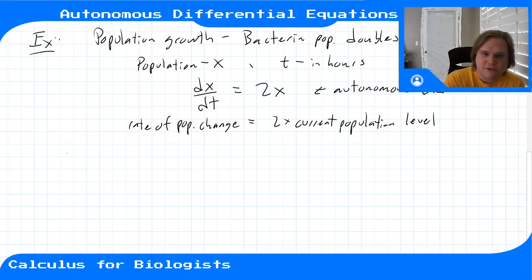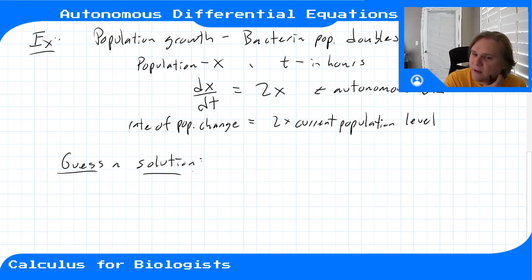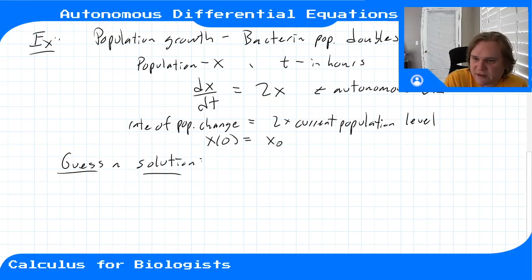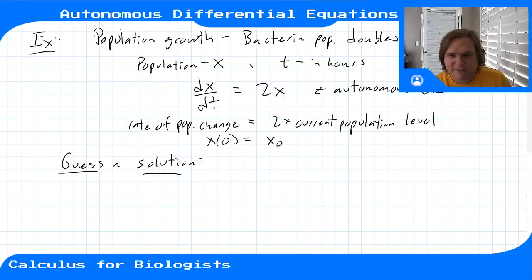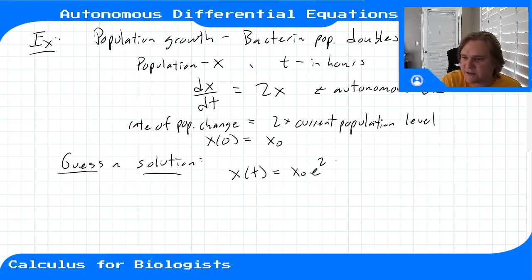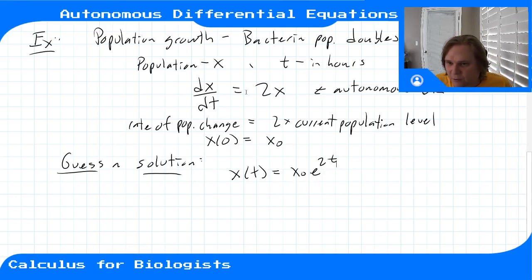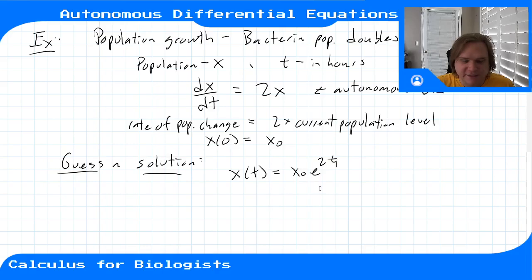We can guess a solution. With the initial condition x(0) = x₀, we're looking for a function whose derivative is equal to two times the original function — that reminds me of exponentials. So I'll guess that x(t) = x₀ e^(2t). It's kind of a lucky guess — I pulled it out of thin air because I've done this problem before, and we will learn a way to go from the equation to the solution without guessing.